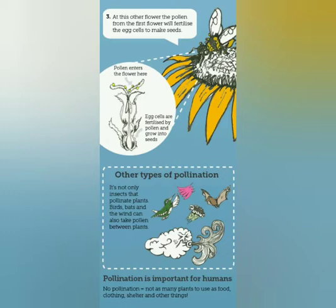Now there are other types of pollination. As we saw, insects, birds, bats, and the wind also take pollen between plants. Why is pollination important? Without pollination, there won't be food, and we can't have clothing, shelter, and other things like this.